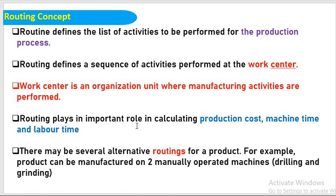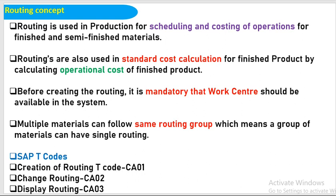This routing is helpful to calculate the production cost, machine time and labor time. In order to produce a product, there are several kinds of activities to perform. For example, there may be two machines — one for drilling and the second one for grinding. These two machines are used to perform the routing activities to produce the manufacturing product. Routing is also used in production for scheduling and costing operations for finished and semi-finished materials, as well as for calculation of the standard cost for a finished product by calculating the operational cost.